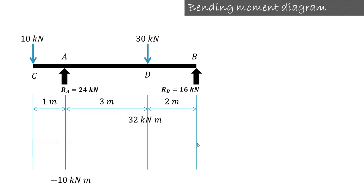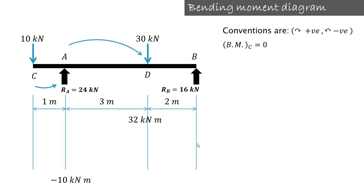Now we have to draw the bending moment diagram. The conventions used are clockwise positive and anticlockwise negative. At the ends of a simply supported beam the moment is 0, so bending moment at C is 0. For bending moment at point A, we consider all forces on the left hand side of A. The 10 kilonewton force produces anticlockwise moment at distance 1, so it is minus 10 into 1 equals minus 10 kilonewton meter.